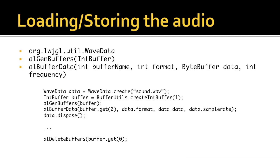Now let's get started with loading and storing the audio file. For this I'm going to be using the WaveData class provided by LWJGL. Note that this class can only load WAV files. We're going to be using two commands: ALGenBuffers and ALBufferData. ALGenBuffers takes an int buffer or integer and generates a handle to the buffer, similar to what we've seen with vertex buffer objects. ALBufferData stores the data of a sound file into the buffer.